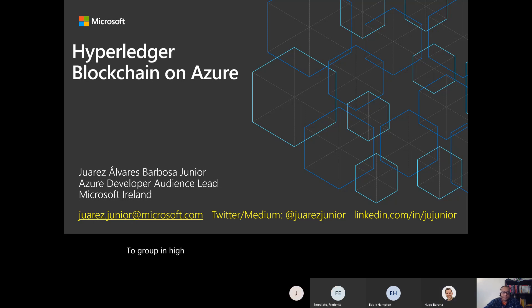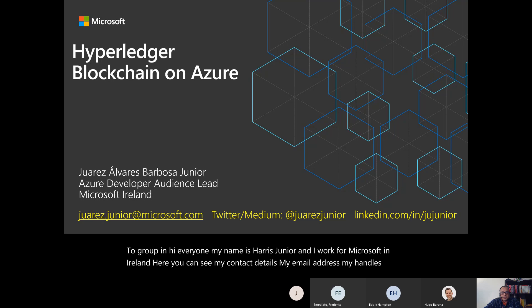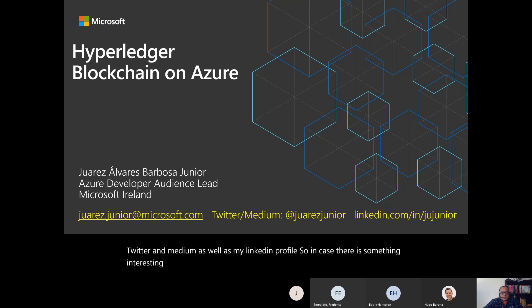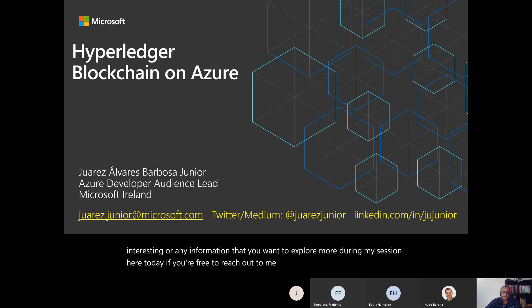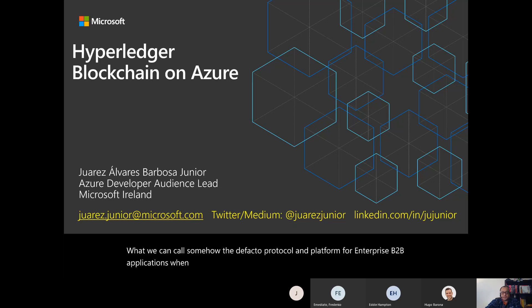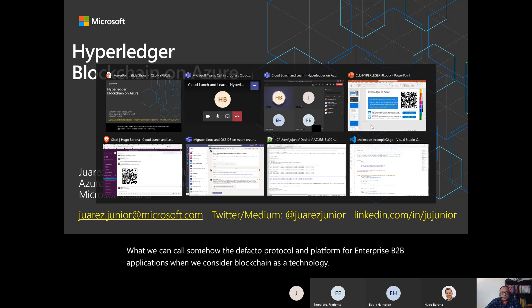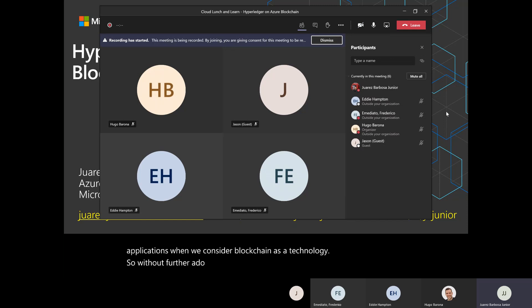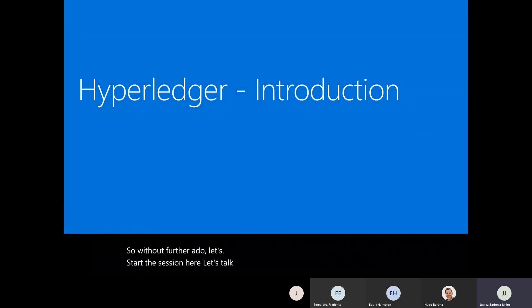Thanks a lot, Hugo. Hi everyone, my name is Juarez Jr. and I work for Microsoft in Ireland. Here you can see my contact details — my email address, my handles on Twitter and Medium, as well as my LinkedIn profile. Feel free to reach out to me. Today we are here to talk about blockchain and Hyperledger blockchain on Azure — the de facto protocol and platform for enterprise B2B applications.